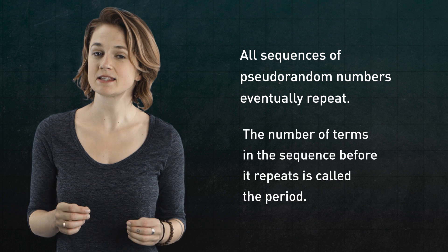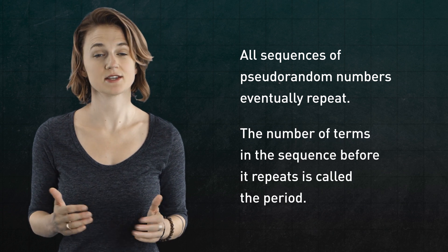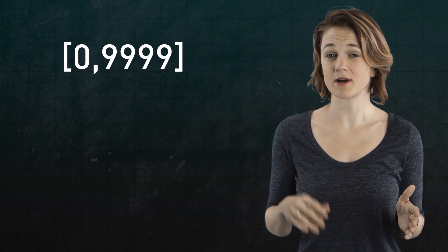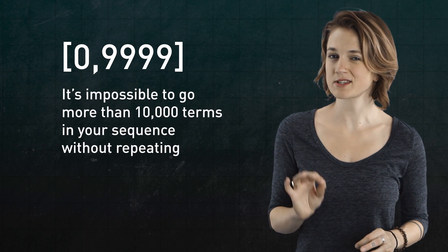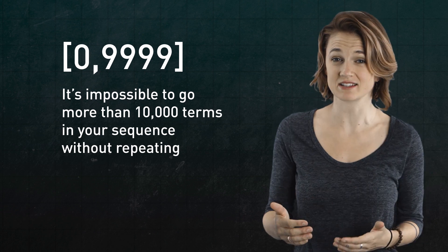The number of terms in the sequence before it repeats is called the period. If, for example, you're generating numbers between 0 and 9,999, it's impossible to go through more than 10,000 terms in your sequence without repeating a number. And as soon as it repeats a number, it has to start cycling.